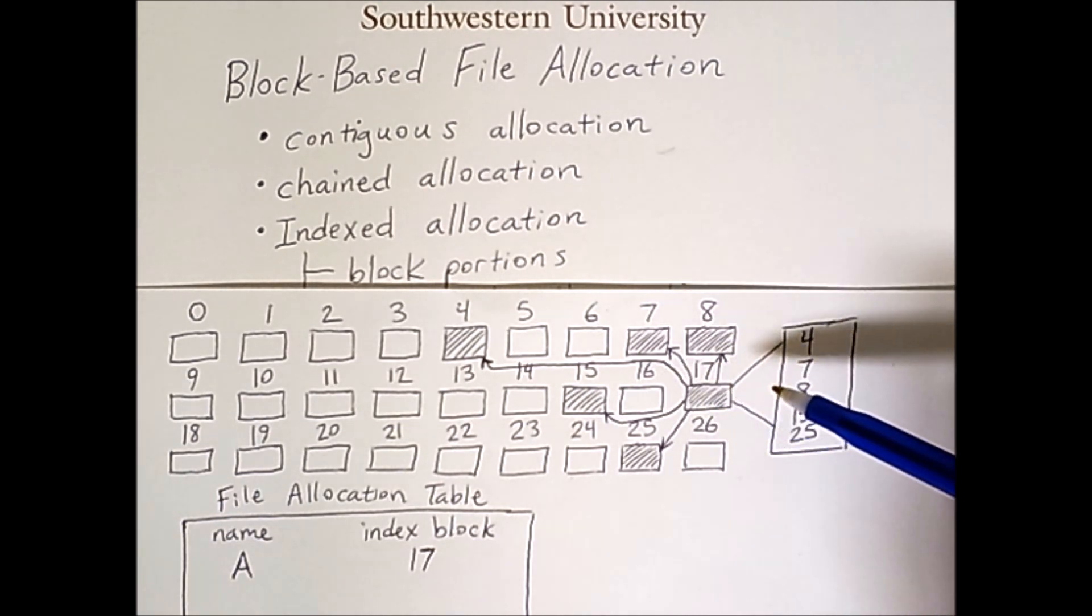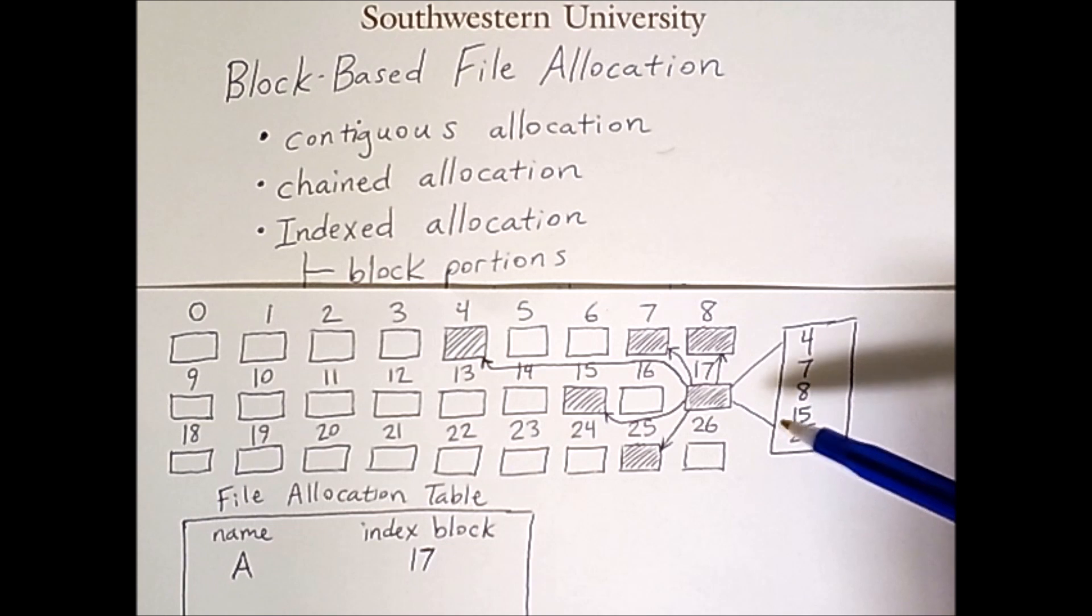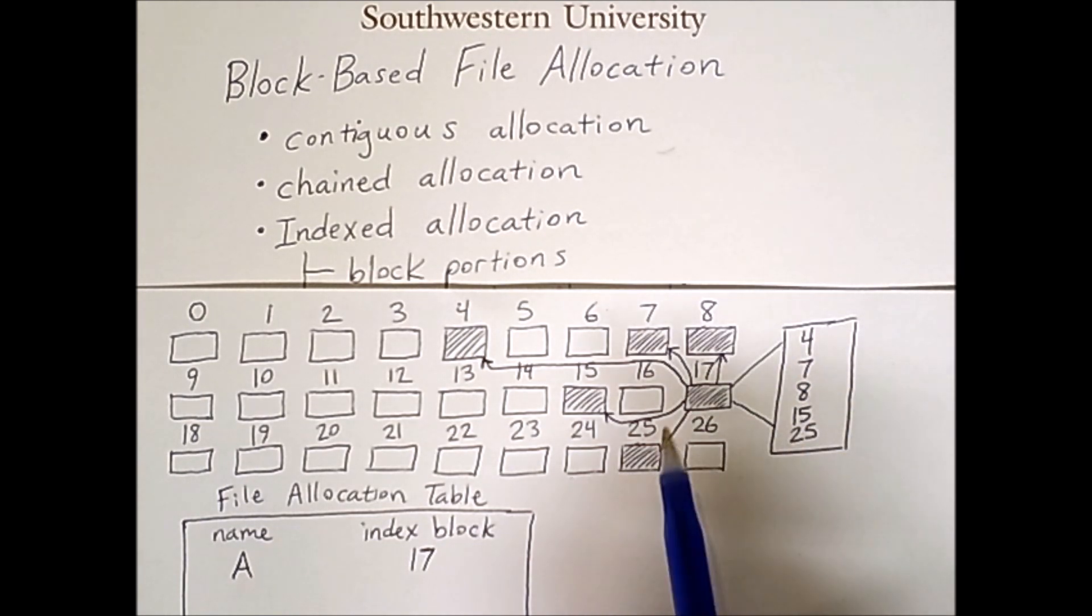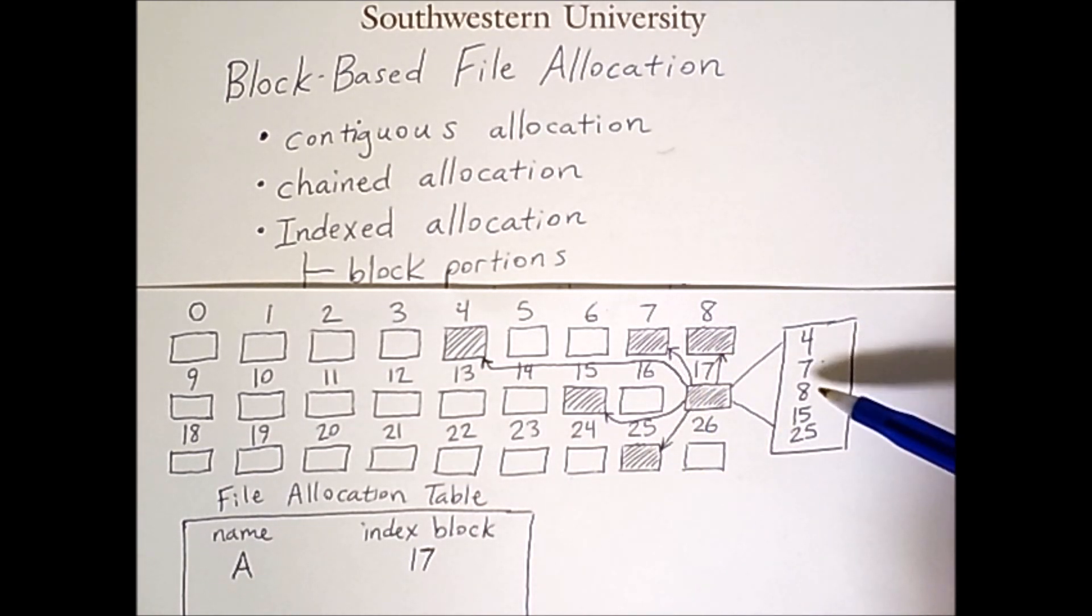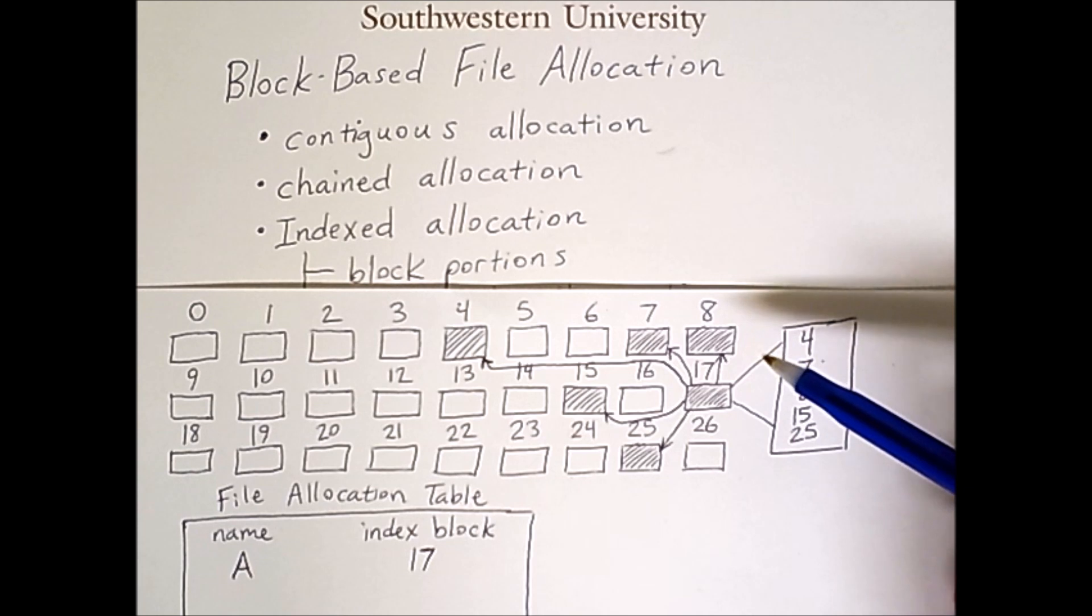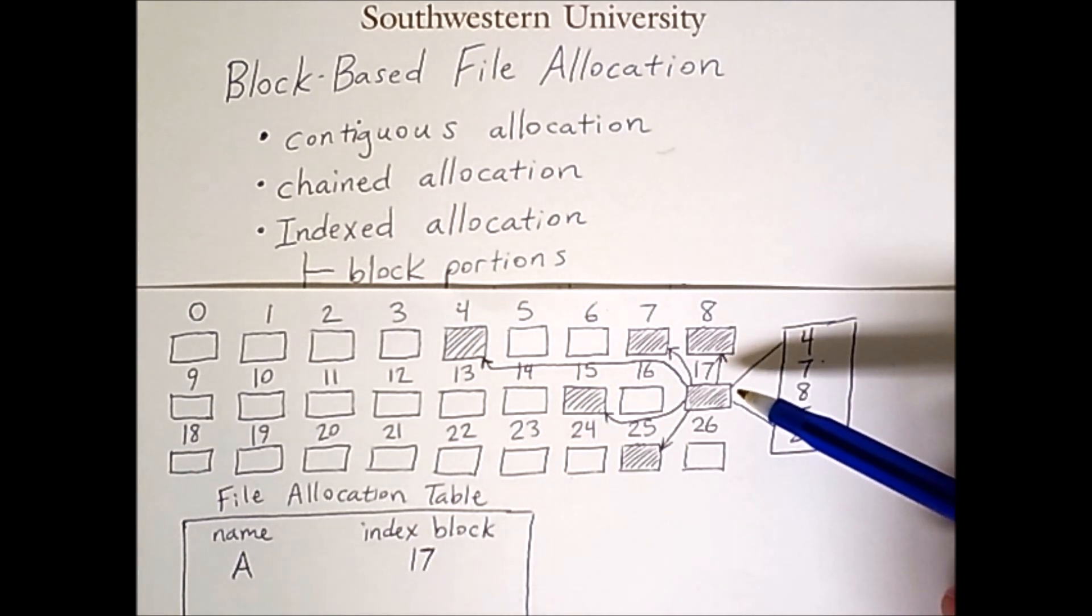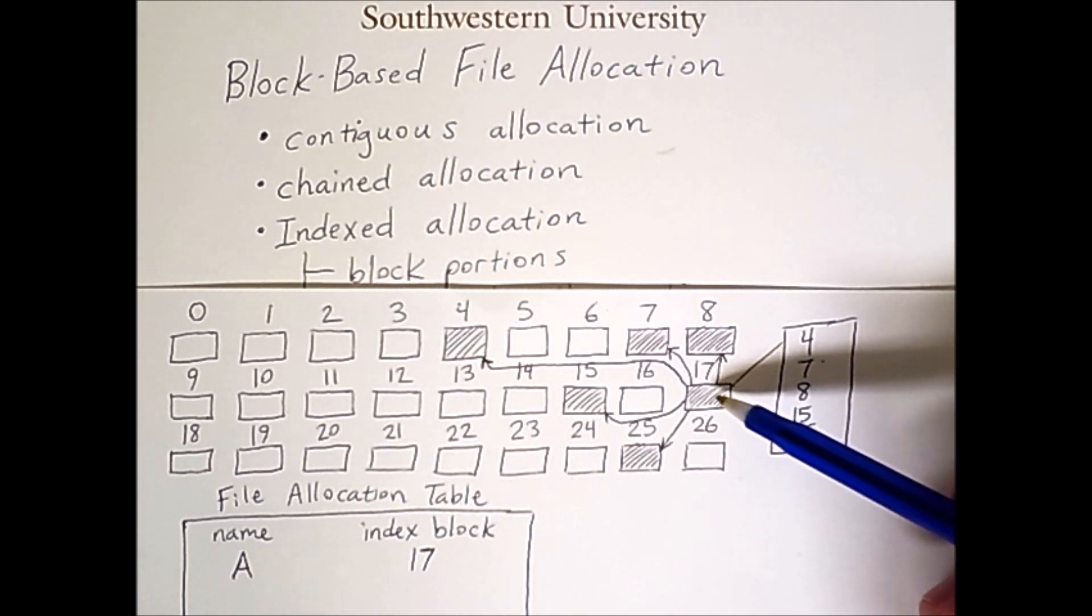However there is still one inefficiency in this implementation and that is the fact that these blocks 7 and 8 are right next to each other but we have two separate pointers one for 7 and one for 8. The next allocation method we'll discuss gets around this bit of wastefulness.